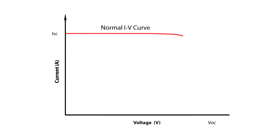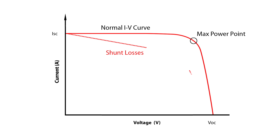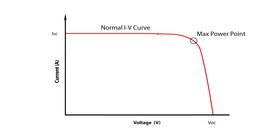A full IV curve trace allows the observation of PV performance at and around the maximum power point. Further diagnostic value is derived from examining the shape of the IV trace. For instance, the slope at the top of the curve will reveal possible shunt losses, and the slope at the right side of the curve will indicate the amount of series loss. Notches in the curve indicate mismatch, which can be caused by shading or other effects.